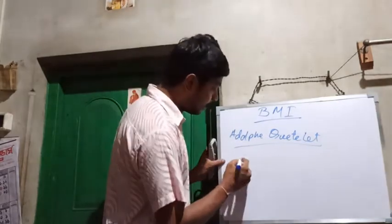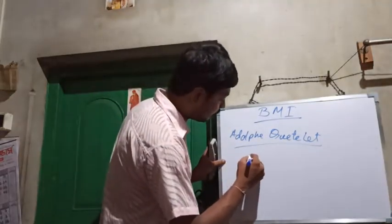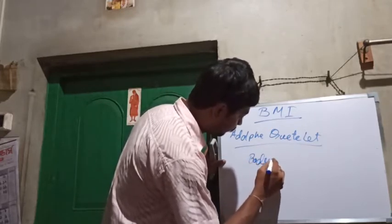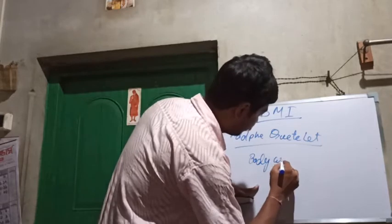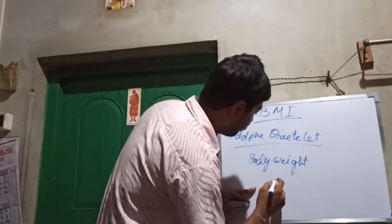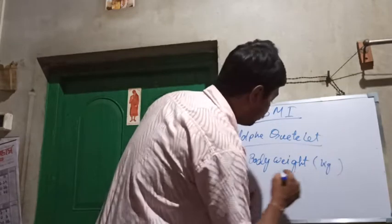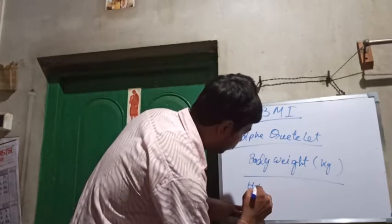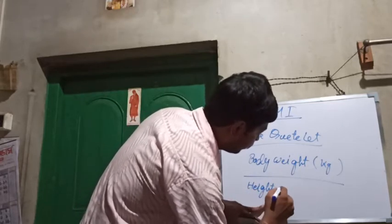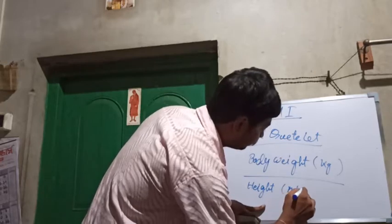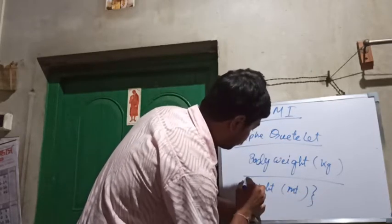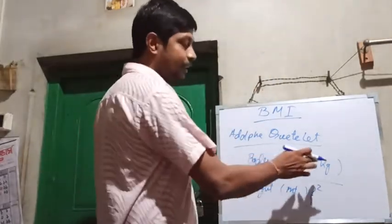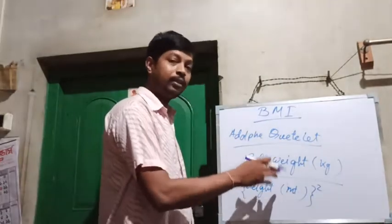So how can BMI be measured? It is measured by body weight in kg divided by height in meter squared. The formula is: BMI = body weight (kg) / height (m)².